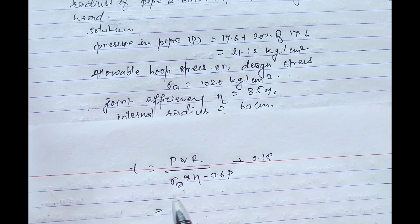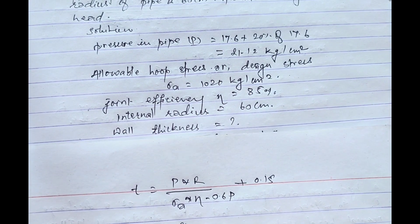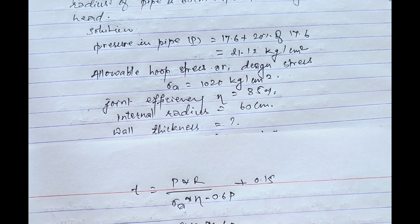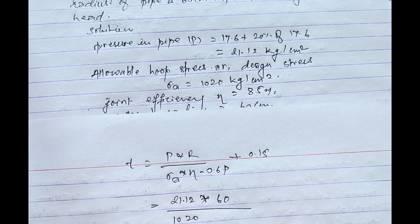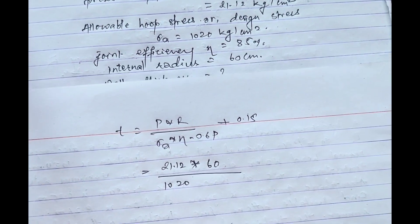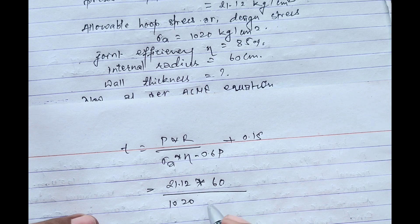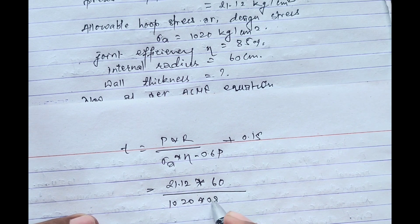P is 21.12, radius is 60, divided by σ_a which is 1020, efficiency is 85 percent or 0.85, minus 0.6 times 21.12 plus 1. On solving this...